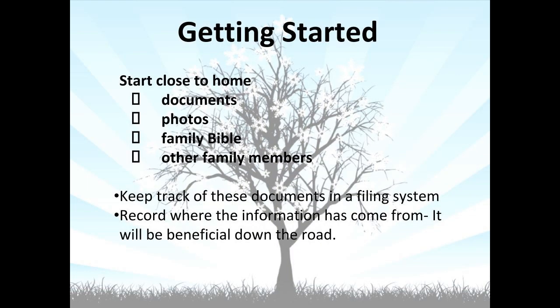People are sometimes stuck right away in the beginning because they don't know where or how to start. The best place is to start at home. Everyone probably has some items already that will aid in your research effort. These can be documents like birth certificates, marriage certificates, passports, deeds, and photographs. Photographs not only document what family members look like, but often there is information written on the back of the photos. Traditionally a family Bible was the place to document family tree information — if you have one of those, you've got a gold mine.